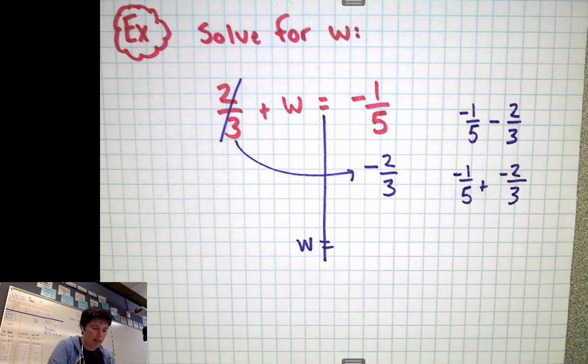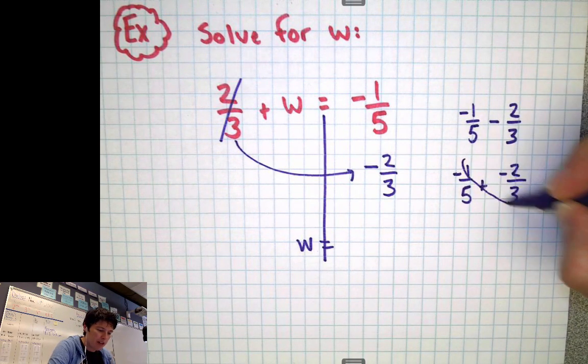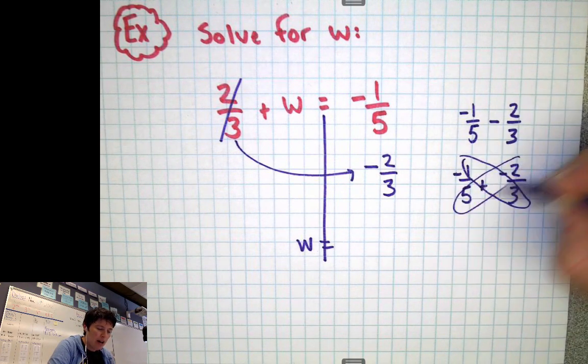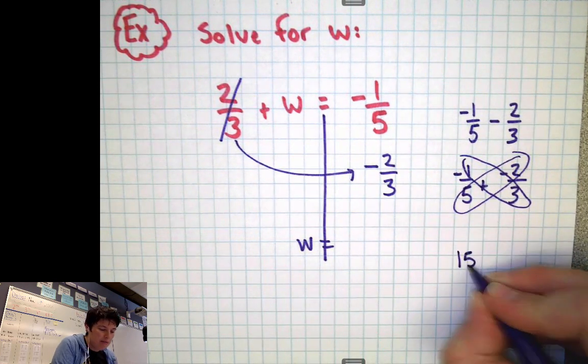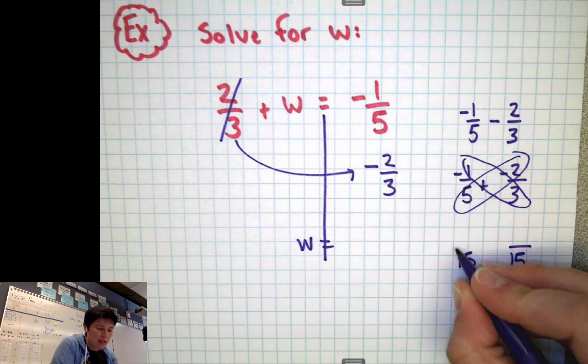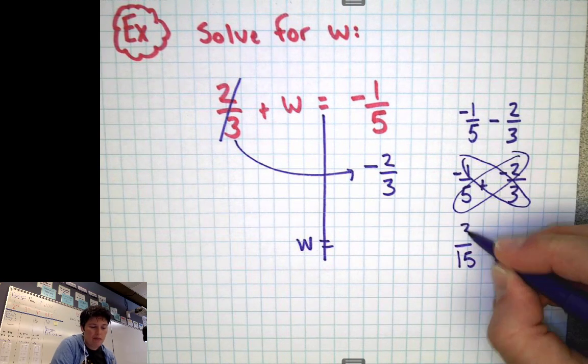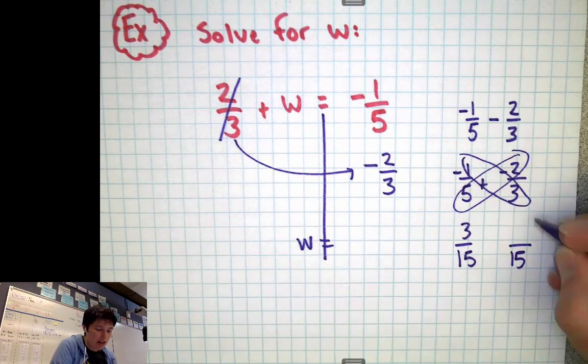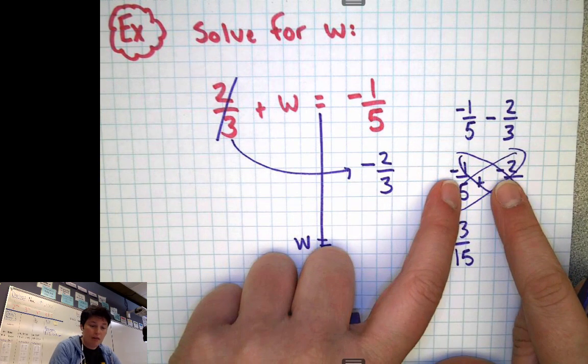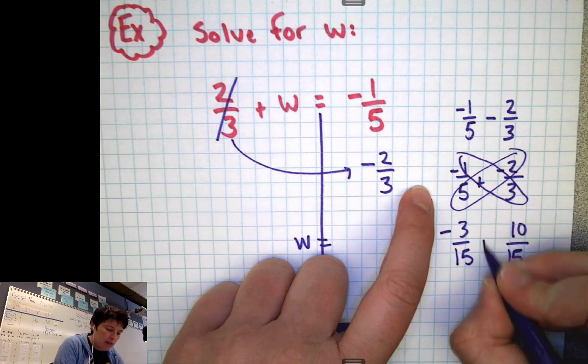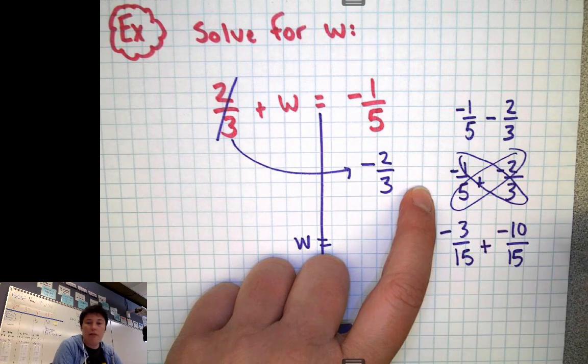And then let's get that common denominator. So I'm going to butterfly it. I know 5 times 3 is going to give me a denominator of 15. So I'll have 15s. 1 times 3 is 3. And 5 times 2 is 10. So this is what we end up getting. But remember, they're both negatives.